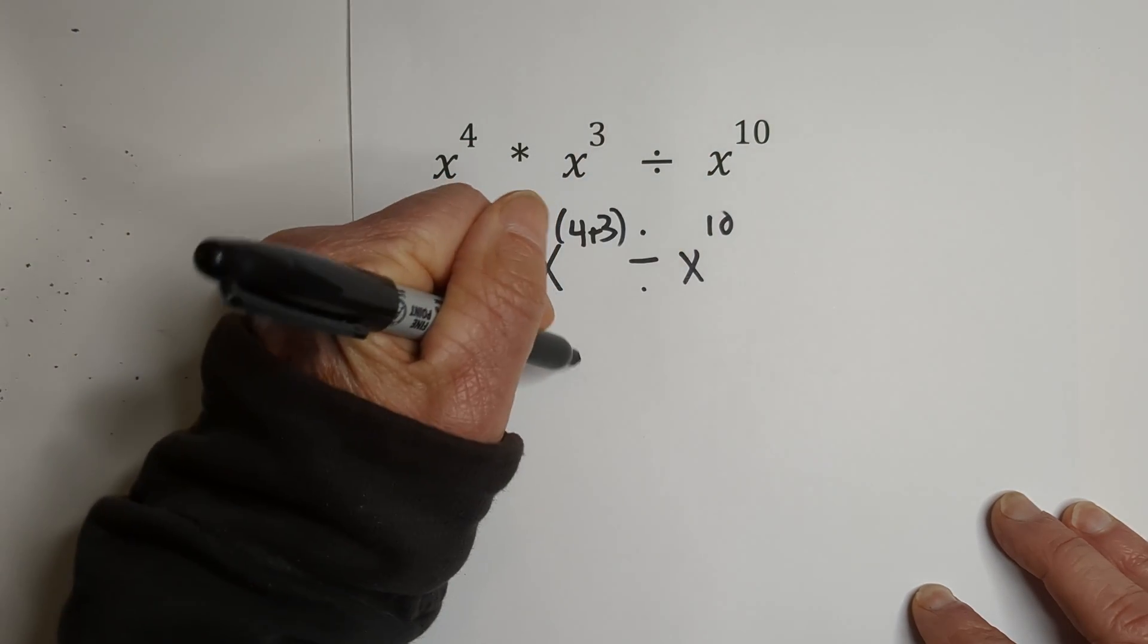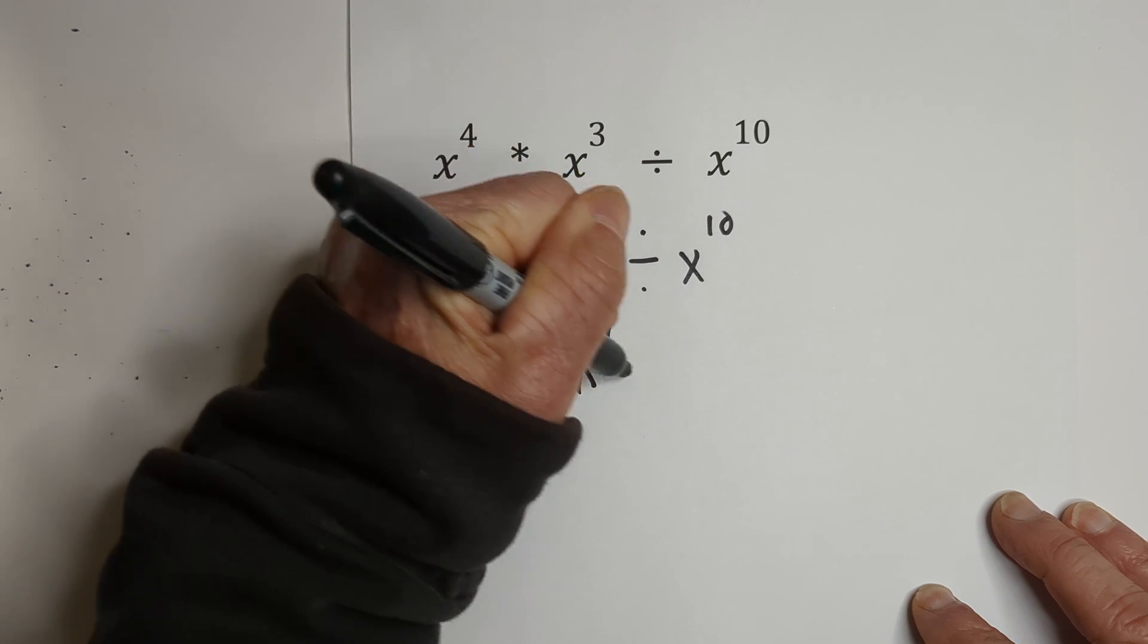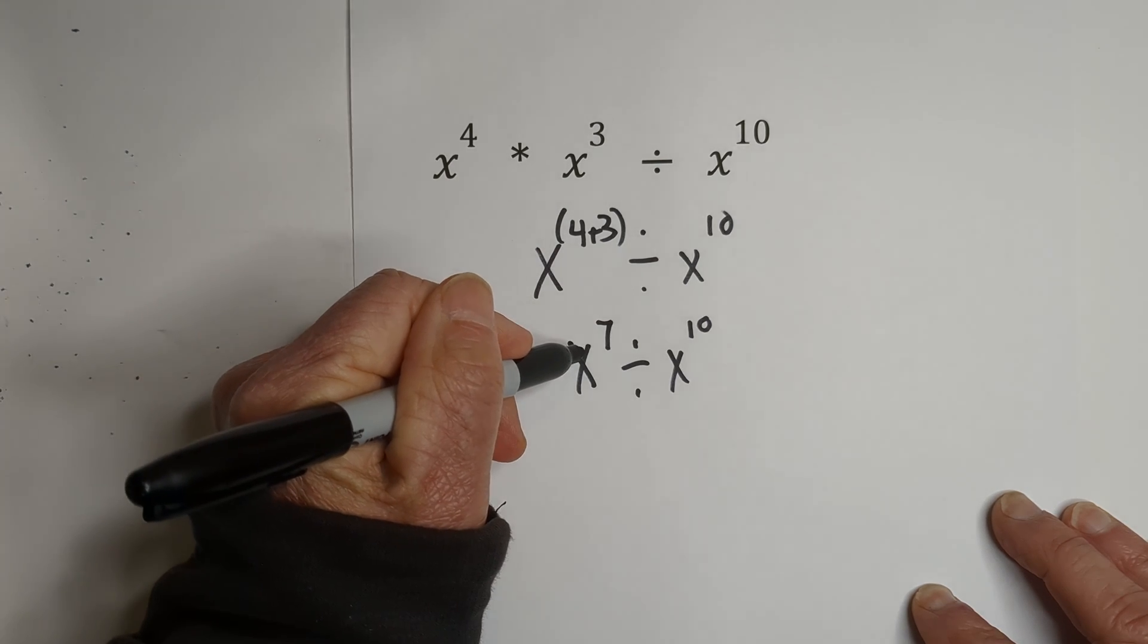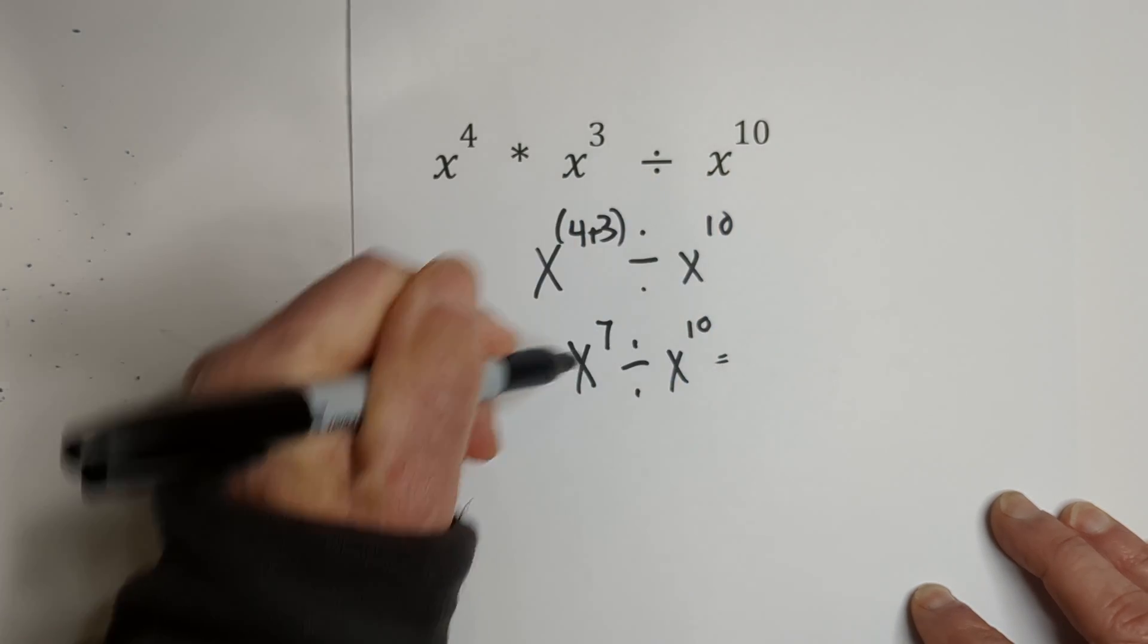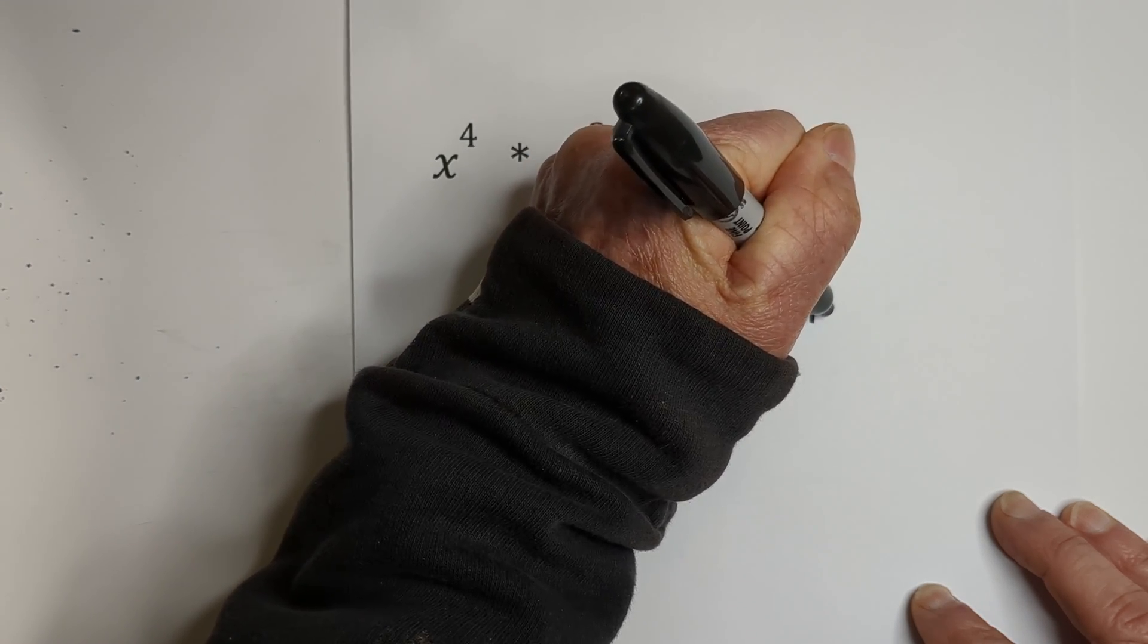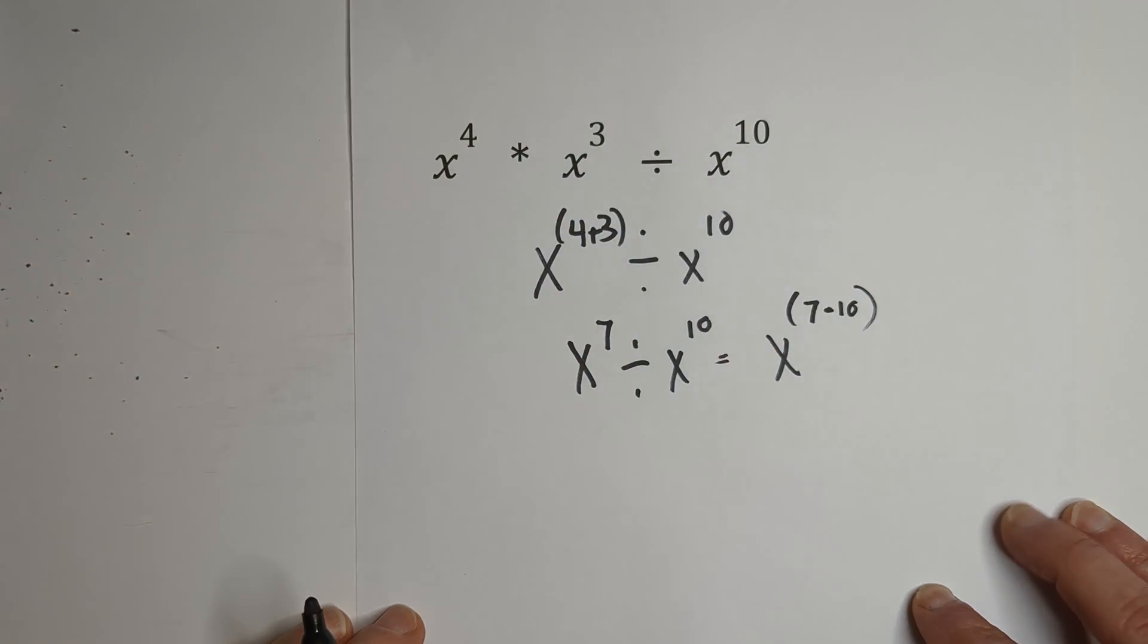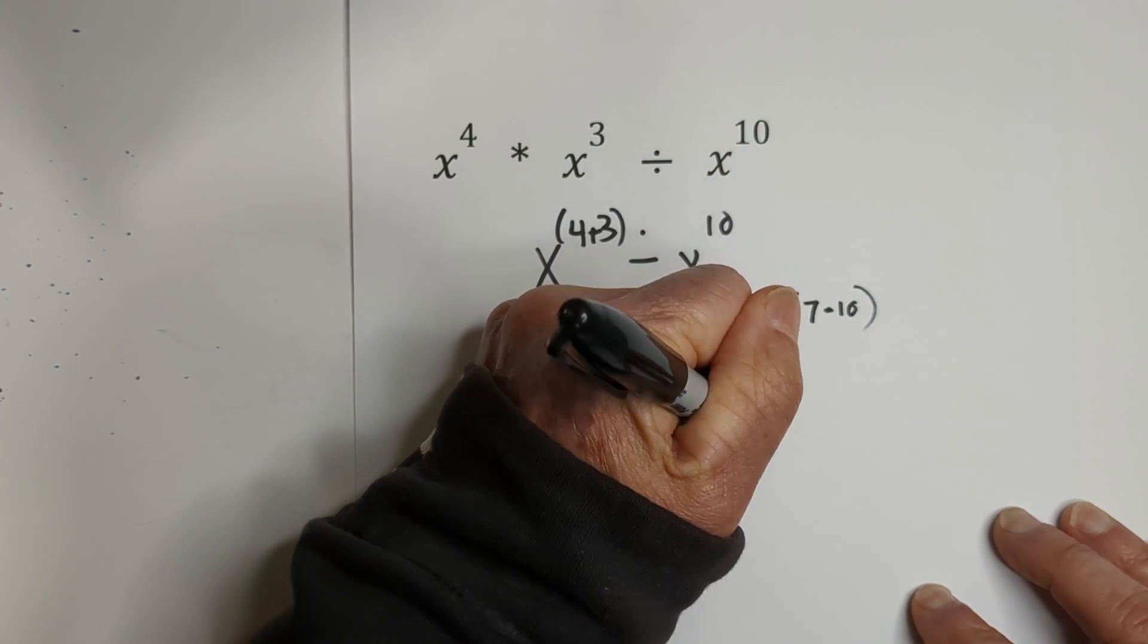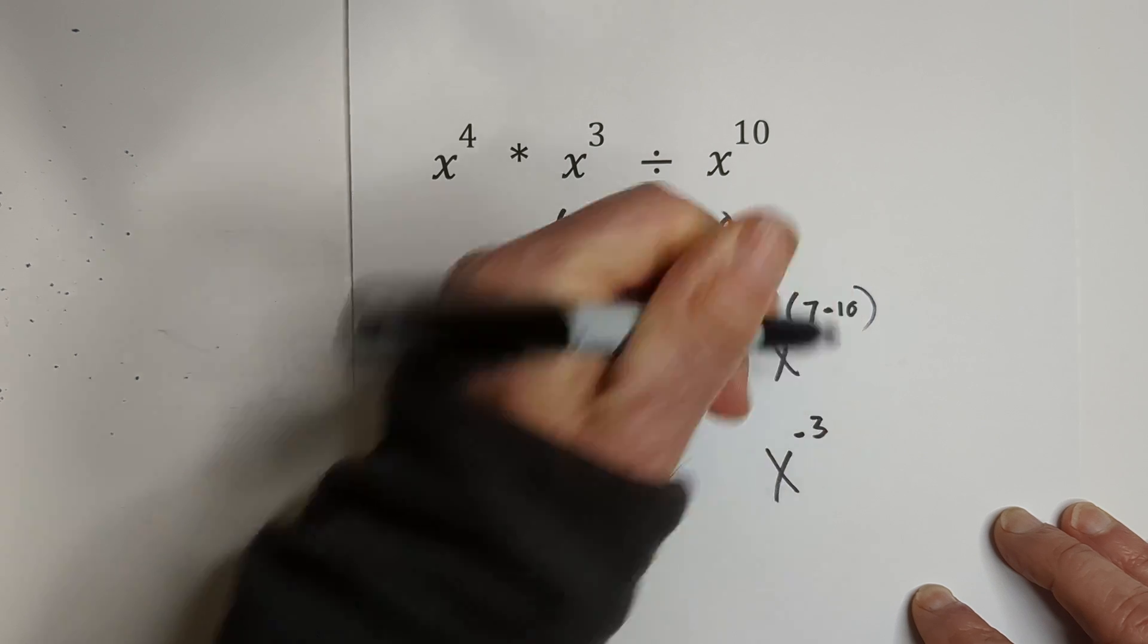So that gives us X to the 7th divided by X to the 10th. Now, remember the rule is when we divide, we're going to subtract. So we have X and that's 7 minus 10.